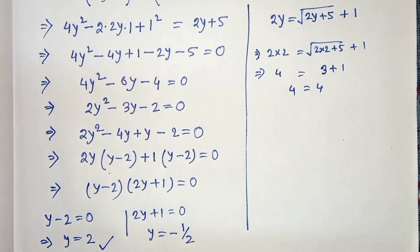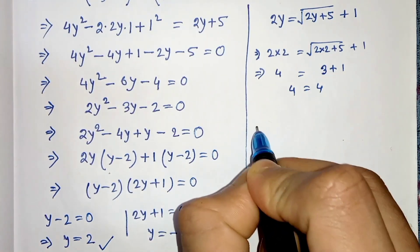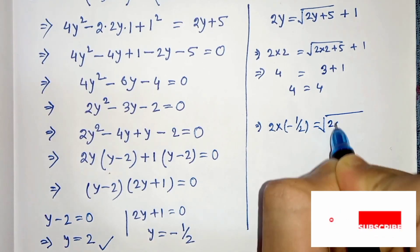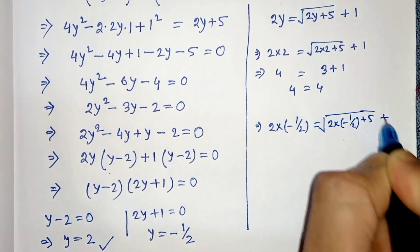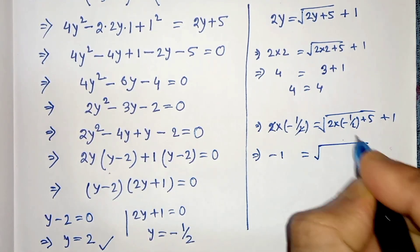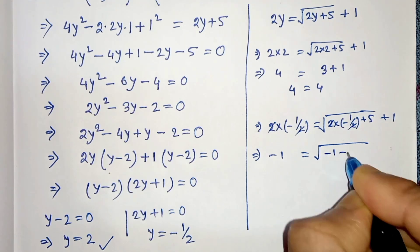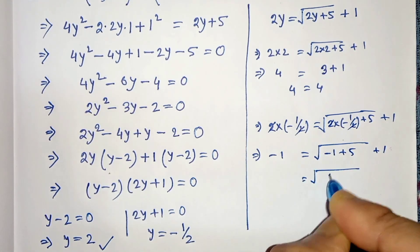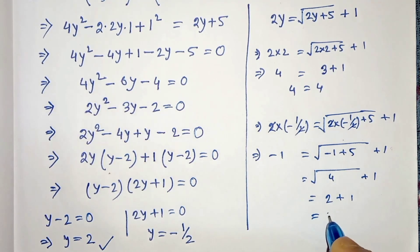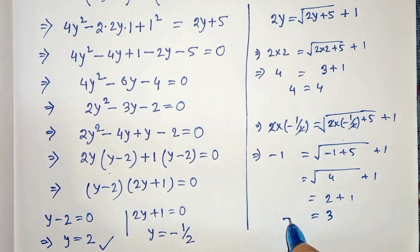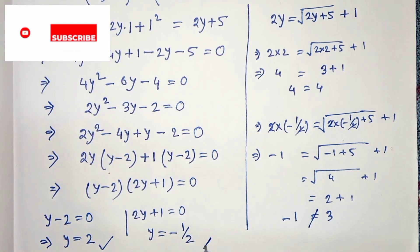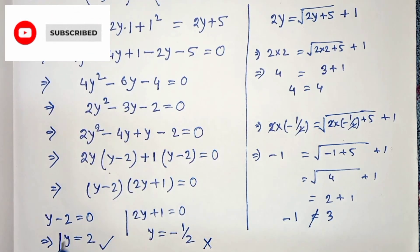Now putting y equals minus one half: the left hand side gives 2 times minus one half equals minus 1. The right hand side gives root under (2 times minus one half plus 5) plus 1, which is root 4 plus 1 equals 2 plus 1 equals 3. Since minus 1 does not equal 3, y equals minus one half is not a valid solution. Therefore our only solution is y equals 2.